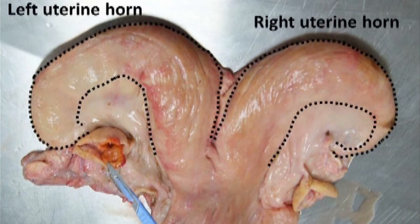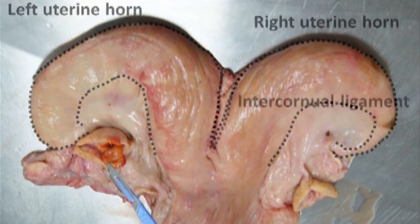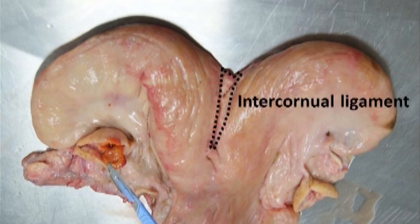The structure referred to as the intercornual ligament, which can now be seen outlined, is located between the left and right uterine horns beyond the level of the bifurcation of those horns from the uterine body.